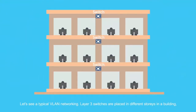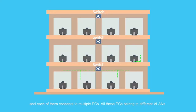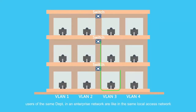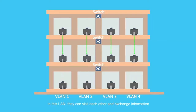Layer 3 switches are placed in different stories of a building, and each of them connects to multiple PCs. All these PCs belong to different VLANs. This shows that VLAN division is not limited by physical position. Once a virtual working group is set up through VLAN, users of the same department in an enterprise network are like being in the same local area network, where they can visit each other and exchange information.